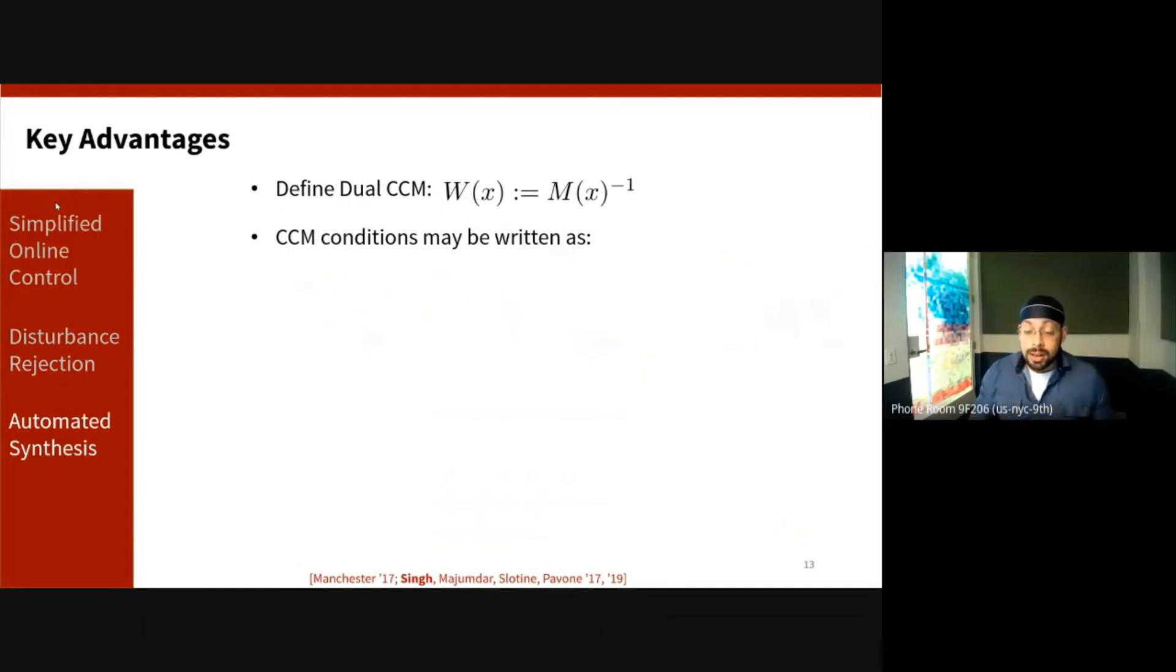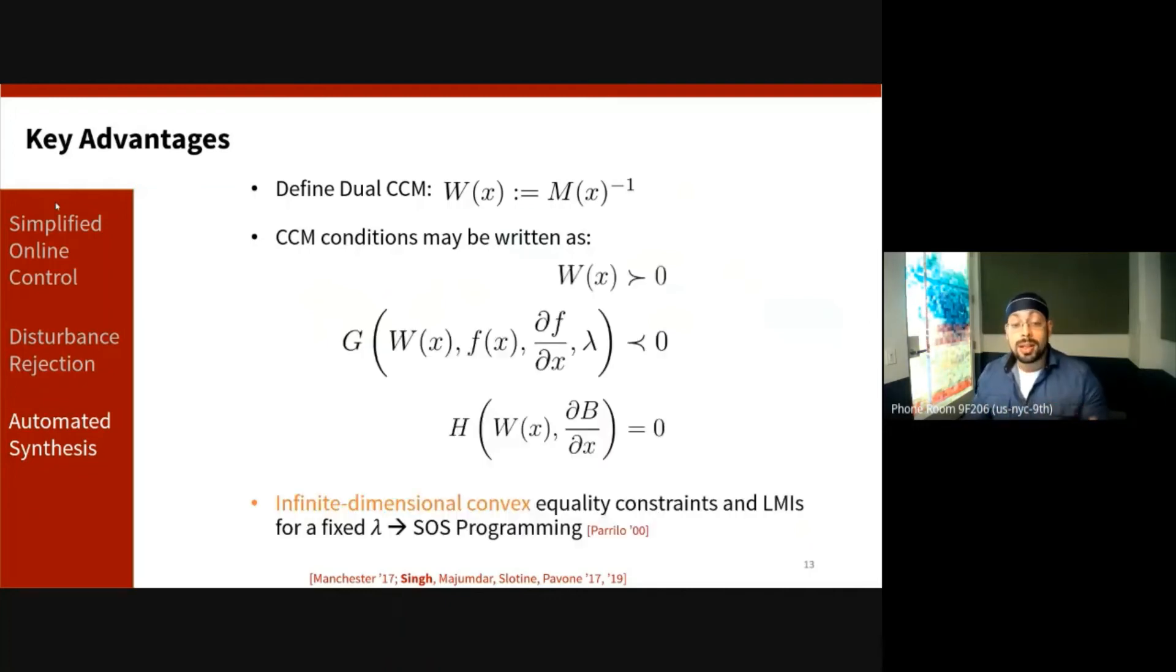In terms of the final advantage of how we want an automated synthesis technique, it turns out that simply by looking at the dual metric, which is the inverse of the CCM, we can write down the conditions that characterize the CCM properties as a set of linear equalities and linear matrix inequalities in the matrix W. And so these are functional constraints, so these need to be satisfied everywhere in the state space, and one popular finite-dimensional tractable formulation of these constraints uses sum-of-squares programming, which is a technique that we've used in our past papers.